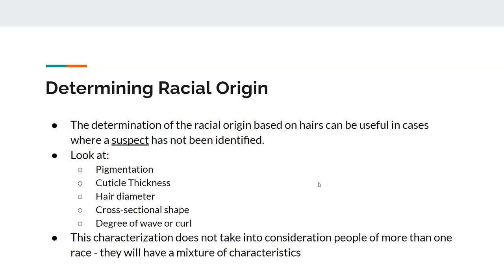In determining the racial origin of a person using hair, you look at the pigment, cuticle thickness, diameter of the hair, its cross-section shape, and degree of wave or curl. This is very useful if you have not yet identified a suspect. One thing to remember is that this data only considers people of one race — if someone has more than one racial origin, their hairs will be a mixture of characteristics.